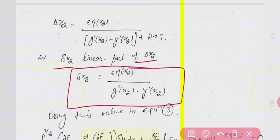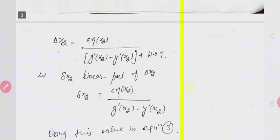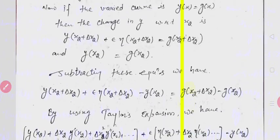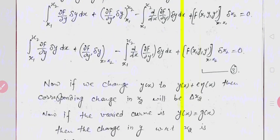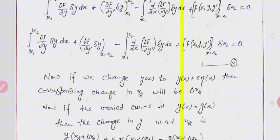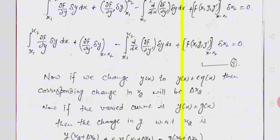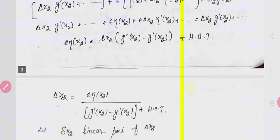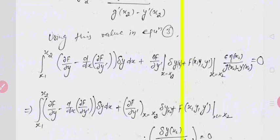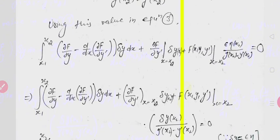Now, from the earlier open equation we solved, the second term required the value of delta x2. That was equation number 3. So we take the value of delta x2 we just derived and replace it back in equation 3. When we put it back in equation 3, we will get the resulting equation.